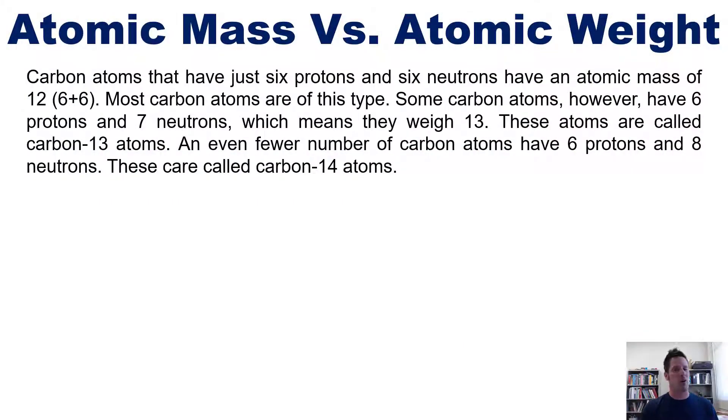Now to atomic mass versus atomic weight. Carbon atoms that have just 6 protons and 6 neutrons have an atomic mass of 12, which is 6 plus 6. Most carbon atoms are of this type. Some carbon atoms have 6 protons and 7 neutrons, which means they weigh 13. These atoms are called carbon 13 atoms. And even fewer carbon atoms have 6 protons and 8 neutrons. These are called carbon 14 atoms.